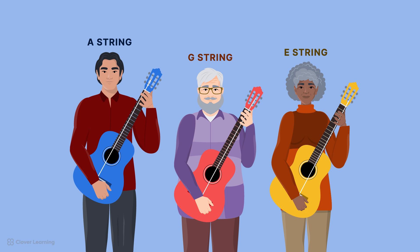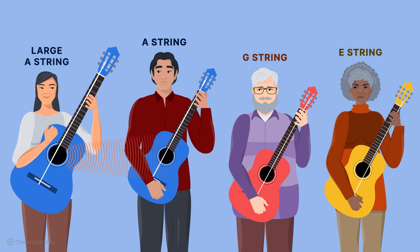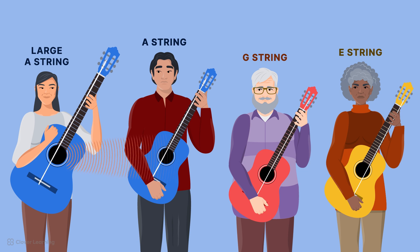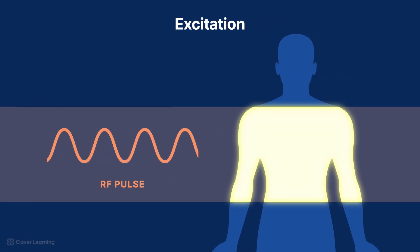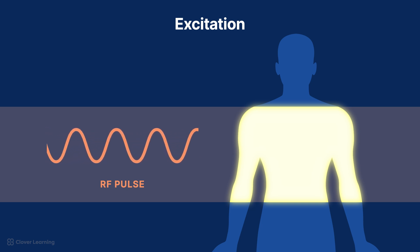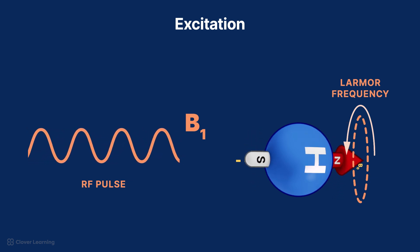Picture a group of people holding guitars, each with only one string. Some guitars only have A strings, some only have G strings, some only have E strings. Someone comes up to the group with a larger guitar with an A string. When the string is plucked, it vibrates and makes a loud sound, causing all of the other A strings to also vibrate and make noise. The G and E strings do nothing. This is similar to what happens when an RF excitation pulse is used at hydrogen's Larmor frequency. An RF excitation pulse is a short burst of radiofrequency energy applied to the area of the body being imaged, precisely tuned to the Larmor frequency of the hydrogen nuclei in the magnetic field.